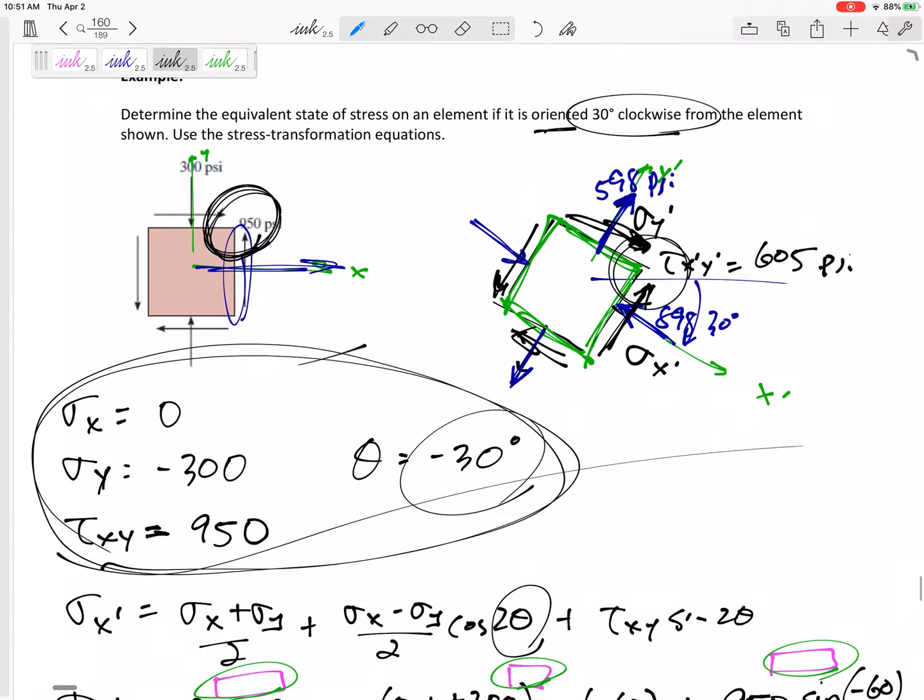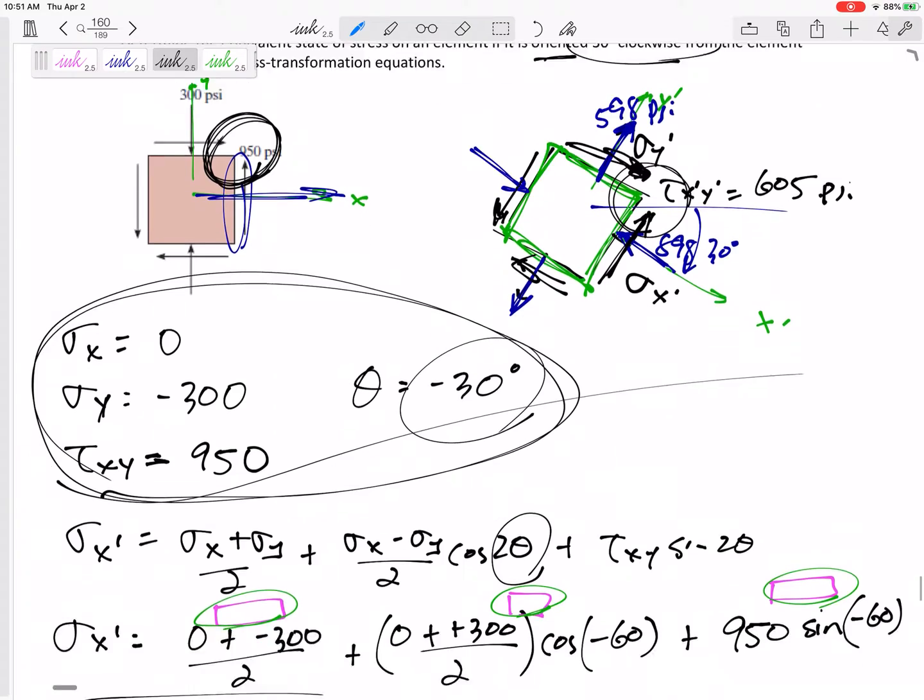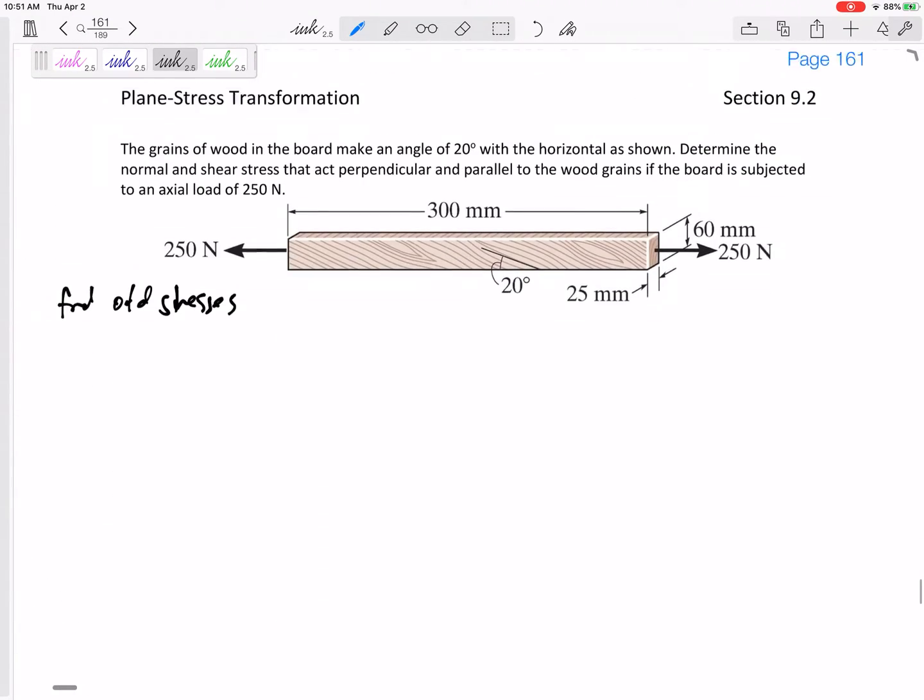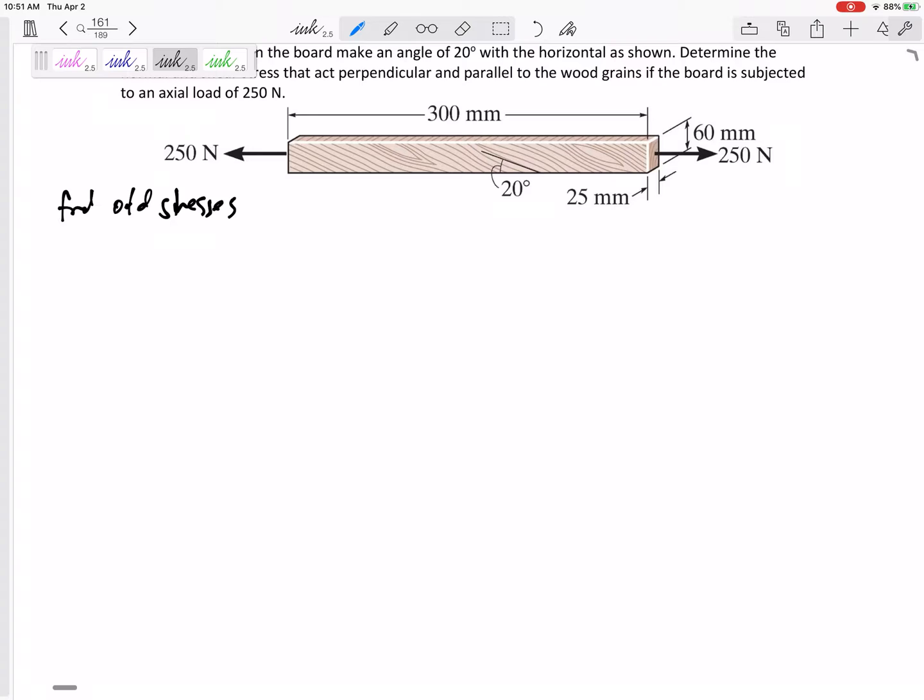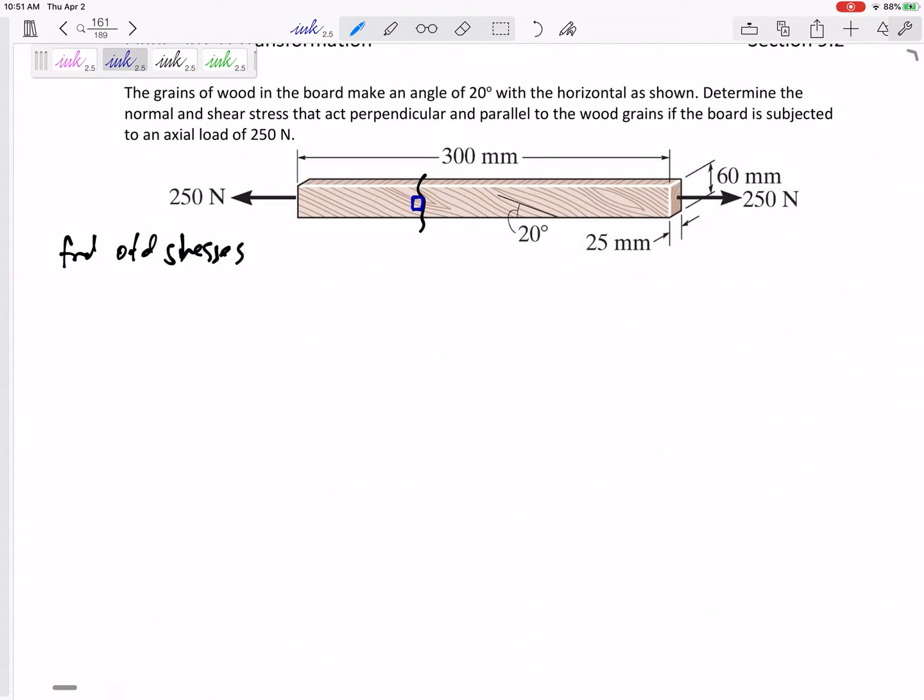First, let's find the old stresses. If you're lucky, it'll be like last problem and you'll just be given an element with those stresses drawn on there. Or you might have to work for it. This one we have to work for, but not too bad. What would the new stresses be if we cut this right here and looked at that blue square, that blue element right there?